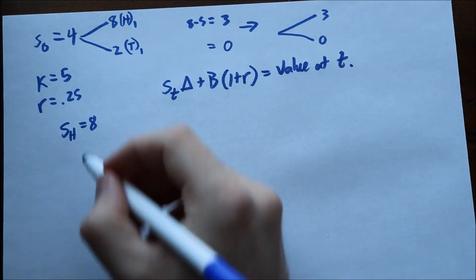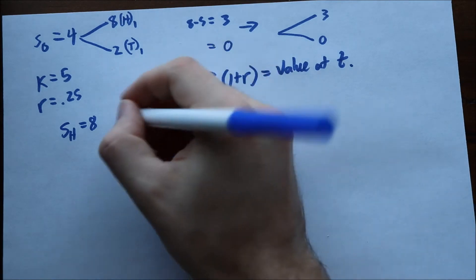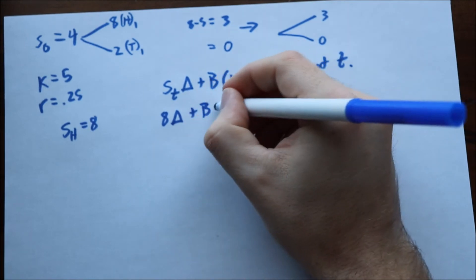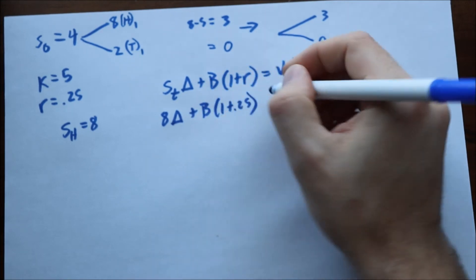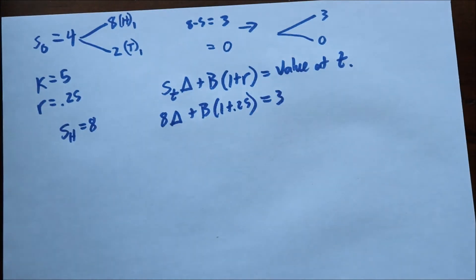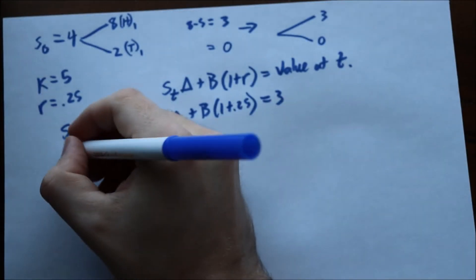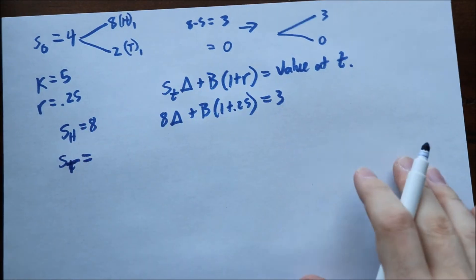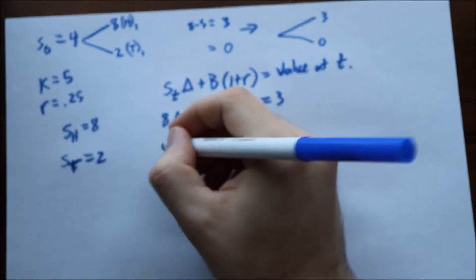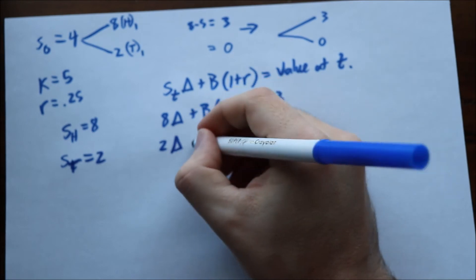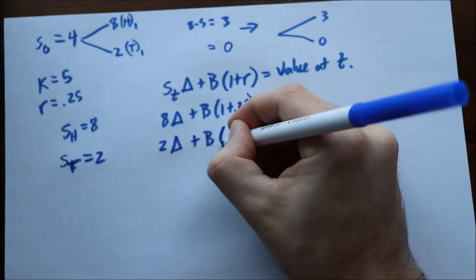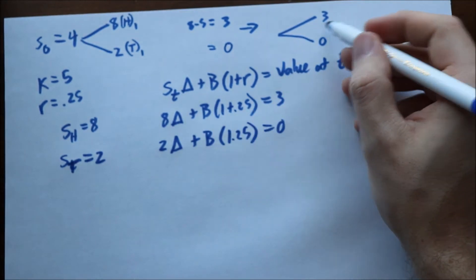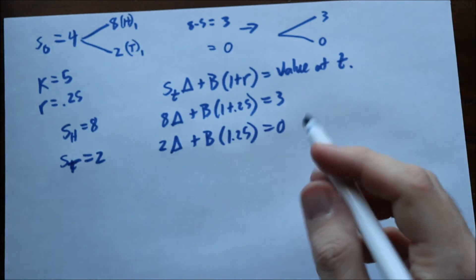When the stock price at heads is 8, we have: 8 times delta plus B times 1.25, and this should equal 3. We also know that when the stock price at tails is 2, we have: 2 times delta plus B times 1.25, and this should equal 0, given our call option above. So now we do some simple algebra and subtract the two equations to solve for delta.